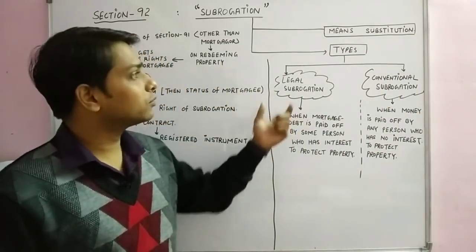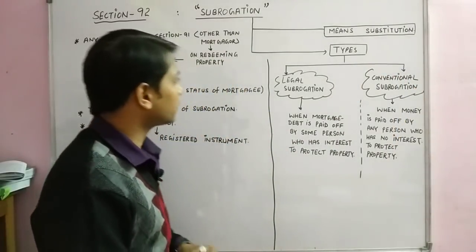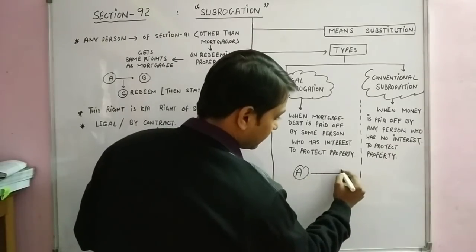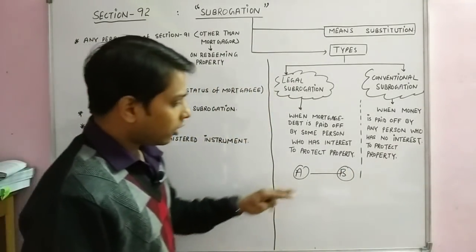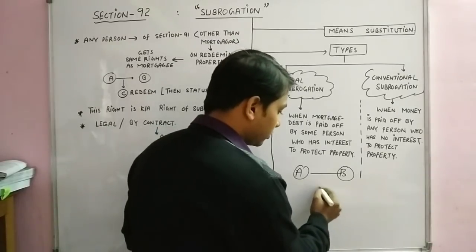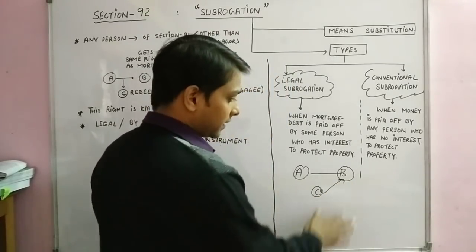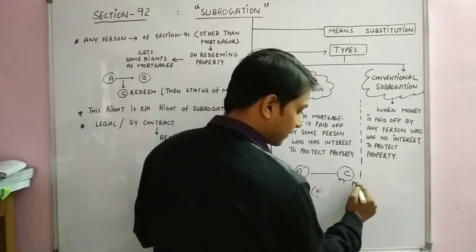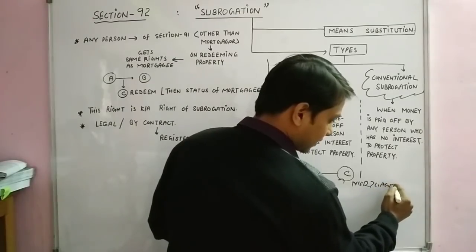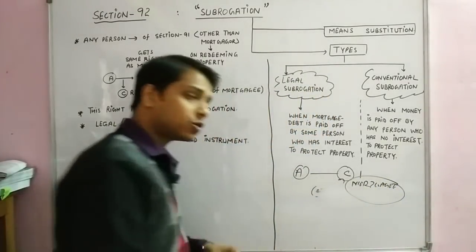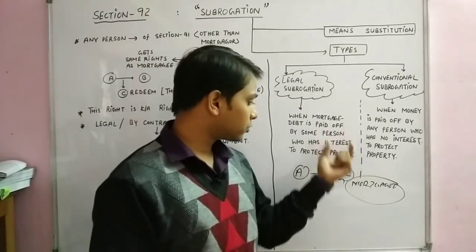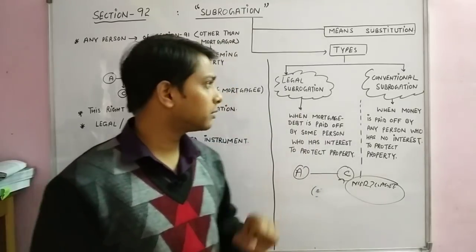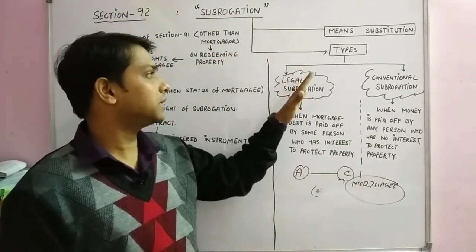Subrogation का मतलब होता है substitution। मान लीजिए एक भाई साहब हैं जिन्होंने अपनी कोई property B को mortgage कर रखी है। किसी C ने उस property को redeem करवा लिया, तो यह भाई साहब उठकर यहाँ आ जाएंगे — अर्थात अब mortgagee का जो status B का था, जो rights B के पास थे, वो rights अब C के पास होंगे। यही मतलब है subrogation का — substitution।